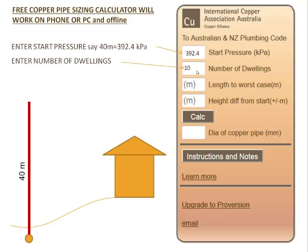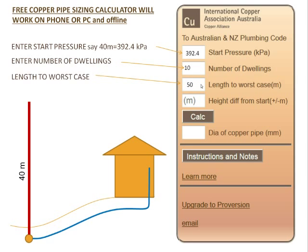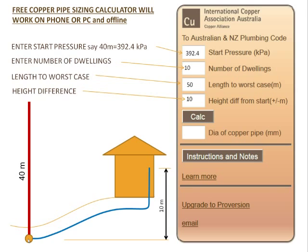We enter the number of dwellings — let's say 10 for argument's sake — the length of the worst case, say 50 meters, shown in the diagrammatic representation here. The height difference is 10 meters from the start, which is the water main, to the highest fixture. Press calculate, and up comes our answer of 32 millimeters diameter copper.